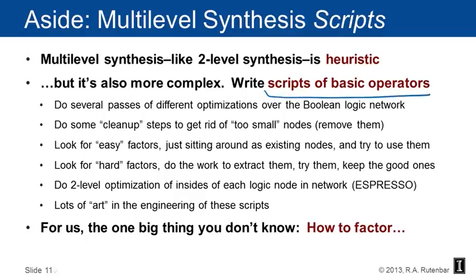We'll do several different passes of different kinds of optimizations. We'll do some clean-up kinds of steps to get rid of the too small nodes and remove them. We'll look for certain kinds of easy factors that are just sitting around in the logic network and say, are you somebody's divisor? Can I profitably reduce somebody's Boolean network node by using you as a factor? We'll look for hard factors where we take a bunch of big complicated nodes and we'll do the difficult work to extract them. And try to keep the good factors and plug them back in. And we'll do two-level optimization on the insides of each logic network node.